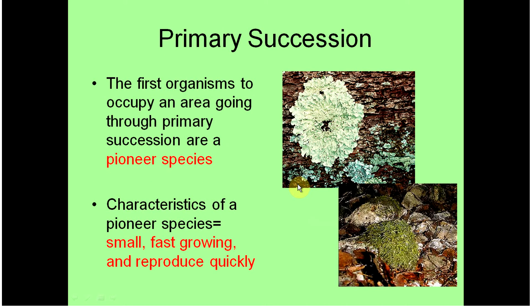The first organisms that come into an area that doesn't have living organisms are called pioneer species — pioneers because they come first. Usually those pioneer species are going to be small, they grow quickly, and they reproduce quickly, so they can colonize an area fast.